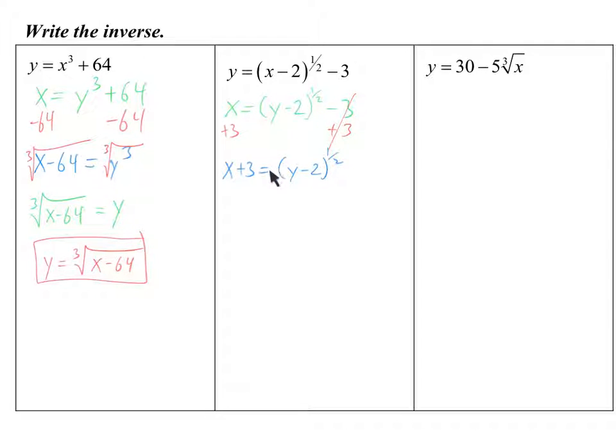All right, there's nothing left added, multiplied, or anything on the outside of that. So I now have to get rid of the power. That's the next piece. How do you get rid of a 1 half? Well, you square both sides.